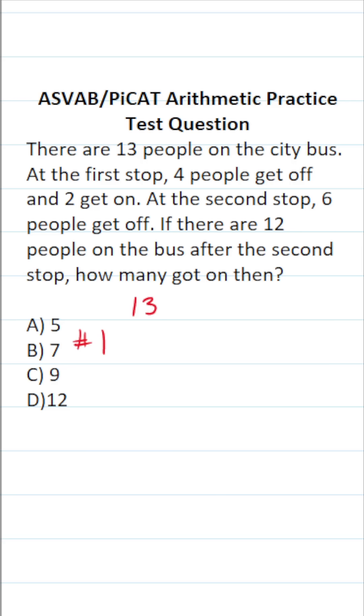Let's talk about the first stop. At the first stop, four people got off the bus, so that's going to be 13 minus four, which is nine. At the same time, we know that two people got on, so that's going to be nine plus two, which is 11.